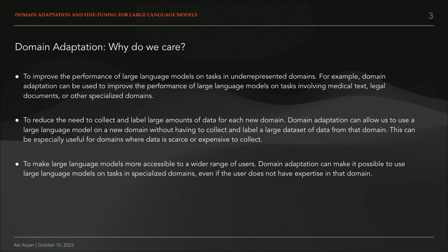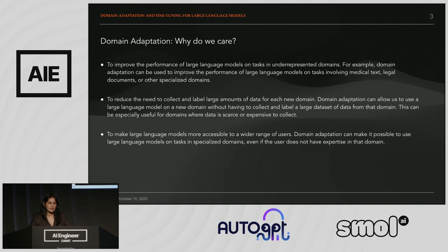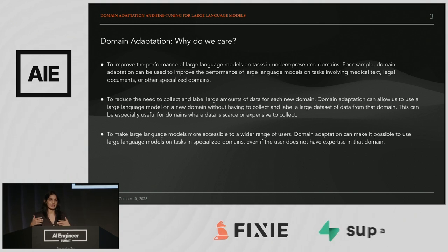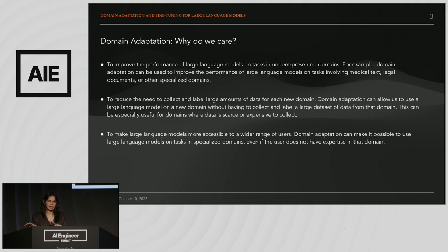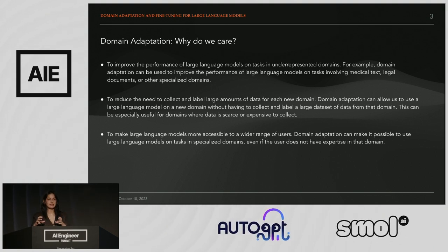There's one paper I would reference. Before transformer models — or even while we were having transformer models — to train a model to learn a new language, we needed to collect data for that particular language. One of the best things that has happened is that because models are learning via embeddings, they're able to learn a new language they've previously not seen, because they're essentially learning the structure of languages, which means some languages are semantically similar.